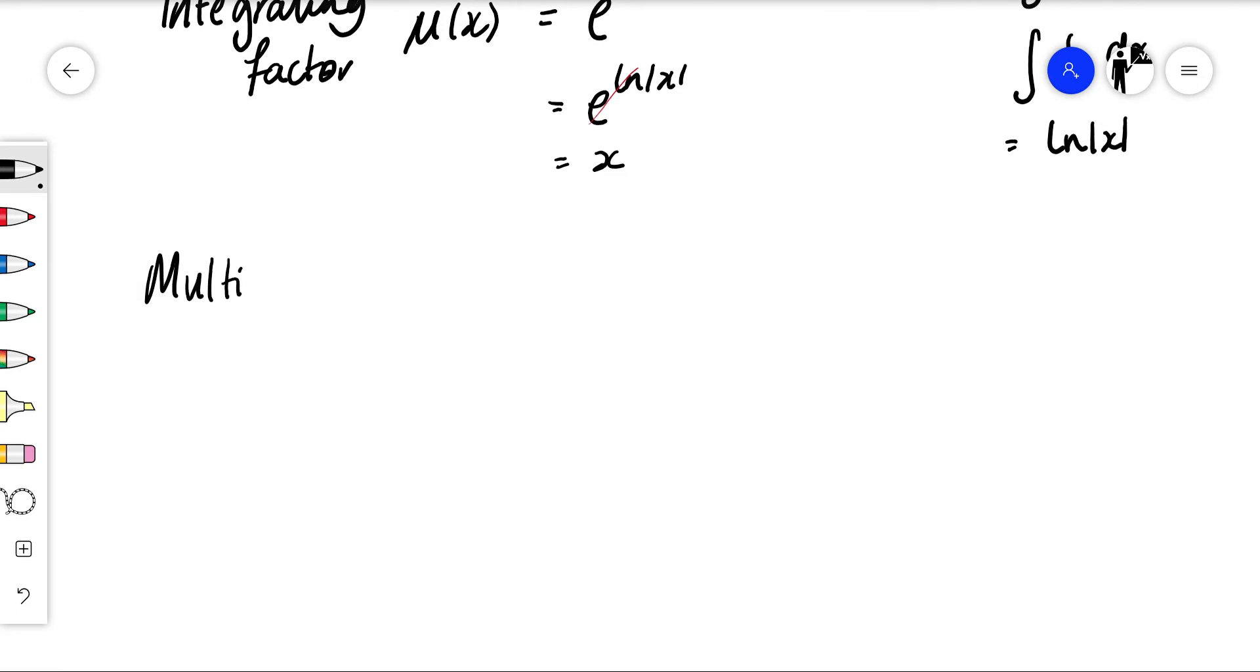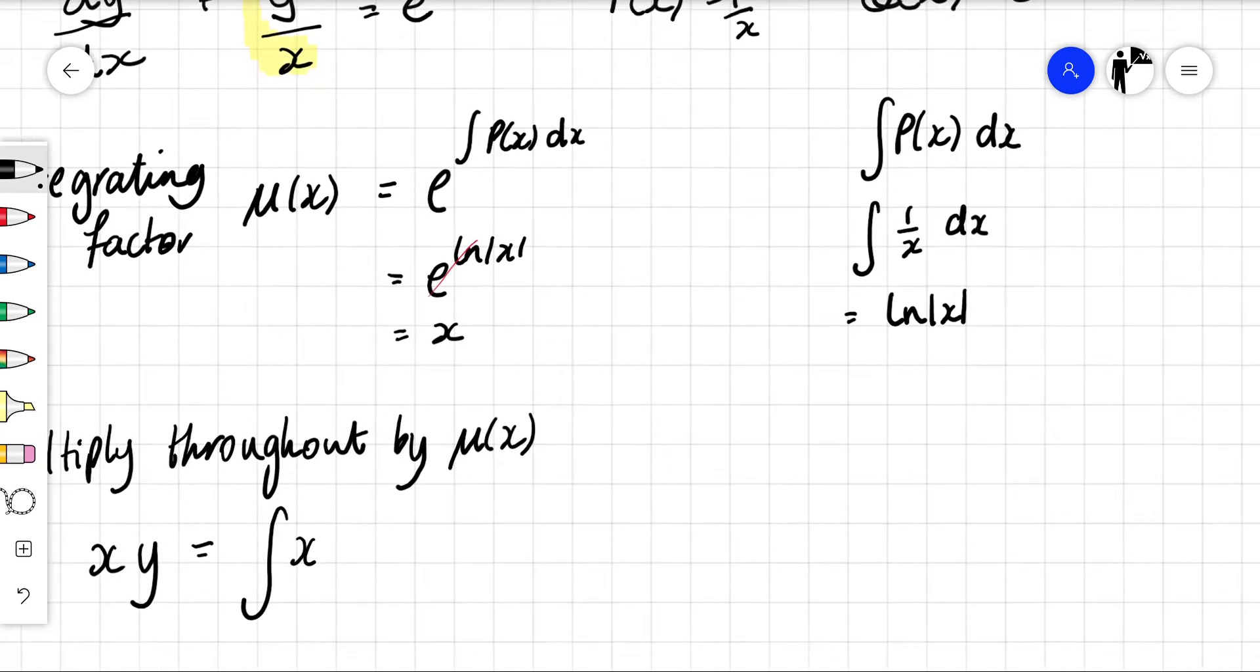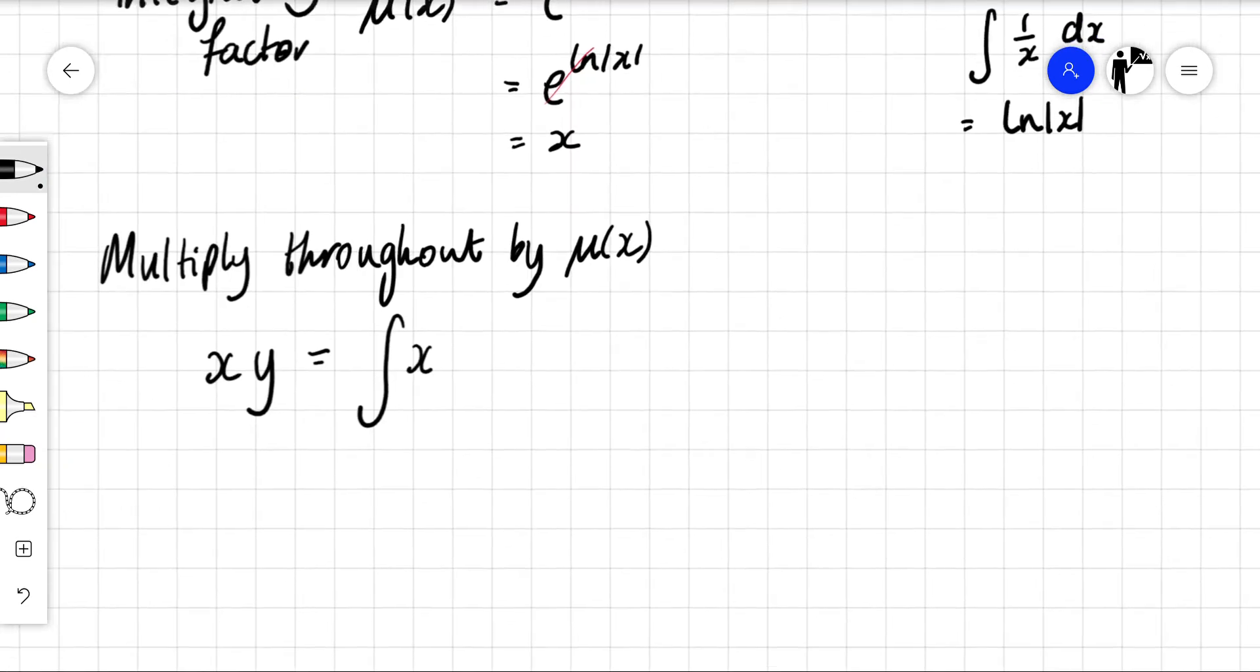we're going to multiply throughout by our integrating factor and it will always be of this formula: the integrating factor times y is equal to the integral of the integrating factor times q of x which is e to the x with respect to x.